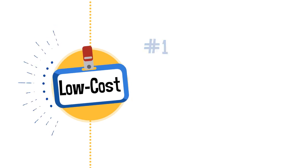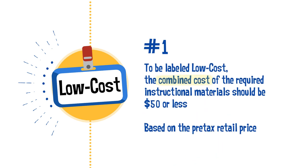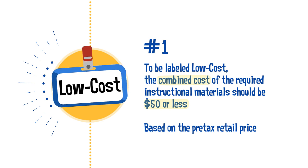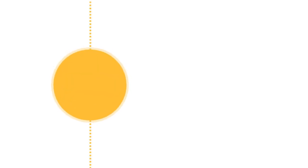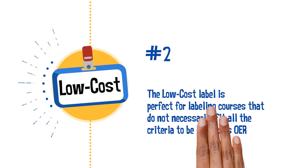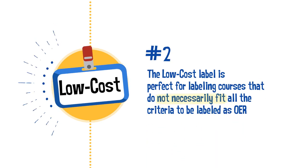Now, some key elements of the low-cost labeling policy. Number one: the combined cost of the required instructional materials should be $50 or less. This threshold is based on the pre-tax retail price and applies to each course regardless of the number of credits offered. Number two: the low-cost label is perfect for courses with affordable materials that do not necessarily fit all the criteria to be labeled as OER. Just remember, the total cost has to be $50 or less.